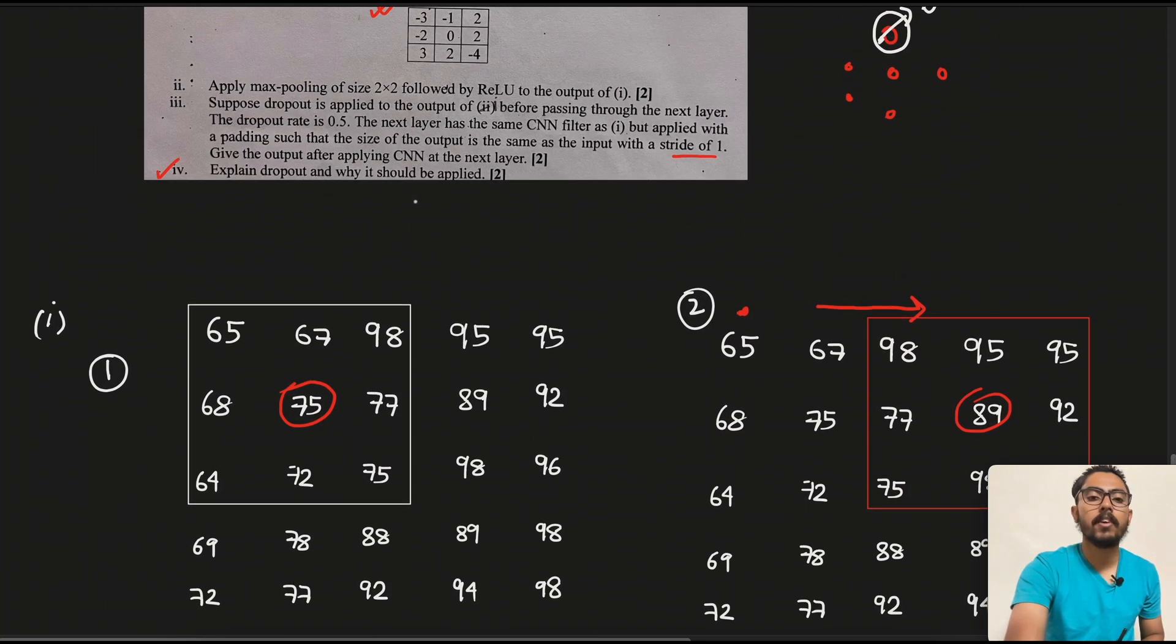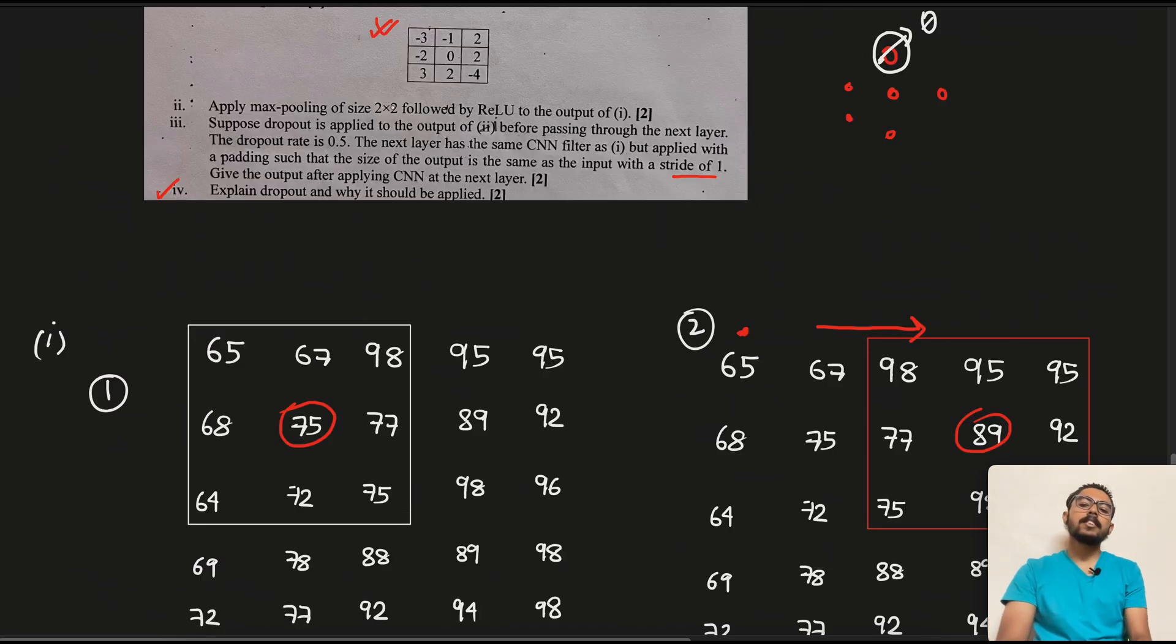Explain dropout and why it should be applied. So as mentioned previously, dropout is a regularization technique, and during training we randomly select a fraction of the neurons, as we saw here, and basically set them to 0 at each step, which forces the network not to rely on specific neurons and encourages generalization.